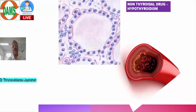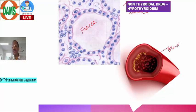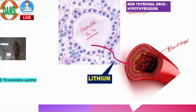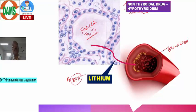There are some non-thyroidal drugs that cause hypothyroidism as an adverse effect. Lithium, useful for bipolar disorder, causes hypothyroidism by inhibiting the release of T3 and T4 from the thyroid follicle — not by inhibiting peripheral conversion. This is the key mechanism by which lithium causes hypothyroidism.